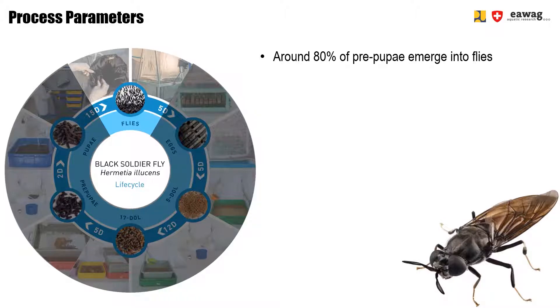We have counted the amount of pre-pupae that transformed to pupae and pupae that have emerged as flies. But to keep collecting data on the performance indicator simple and not too time-intensive, we count directly the emergence rate of flies from pre-pupae, which is around the 80% that I just mentioned.